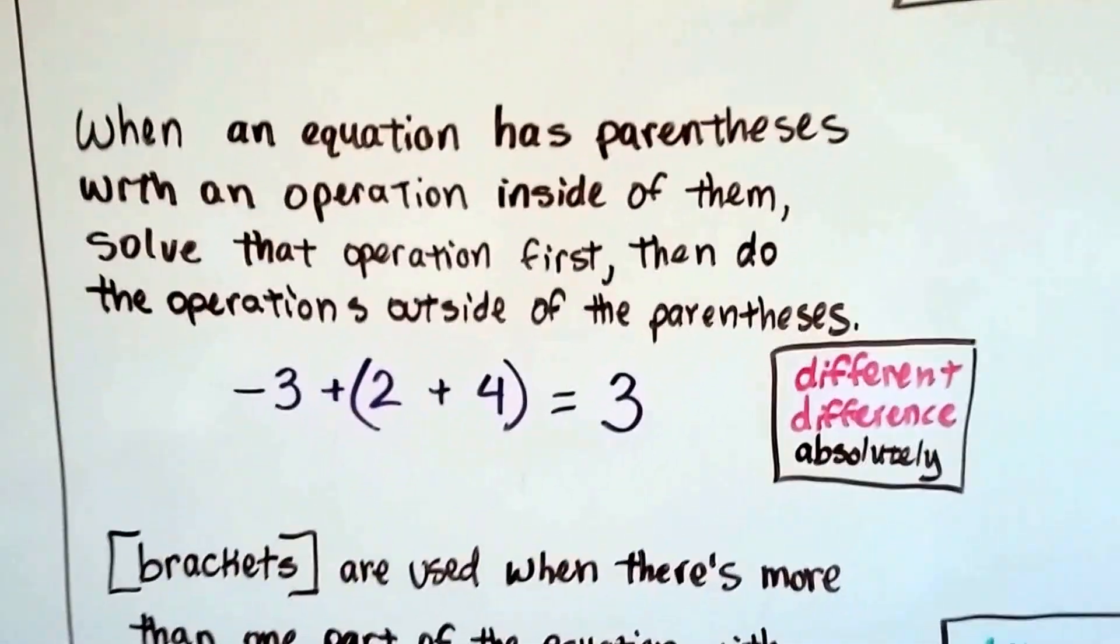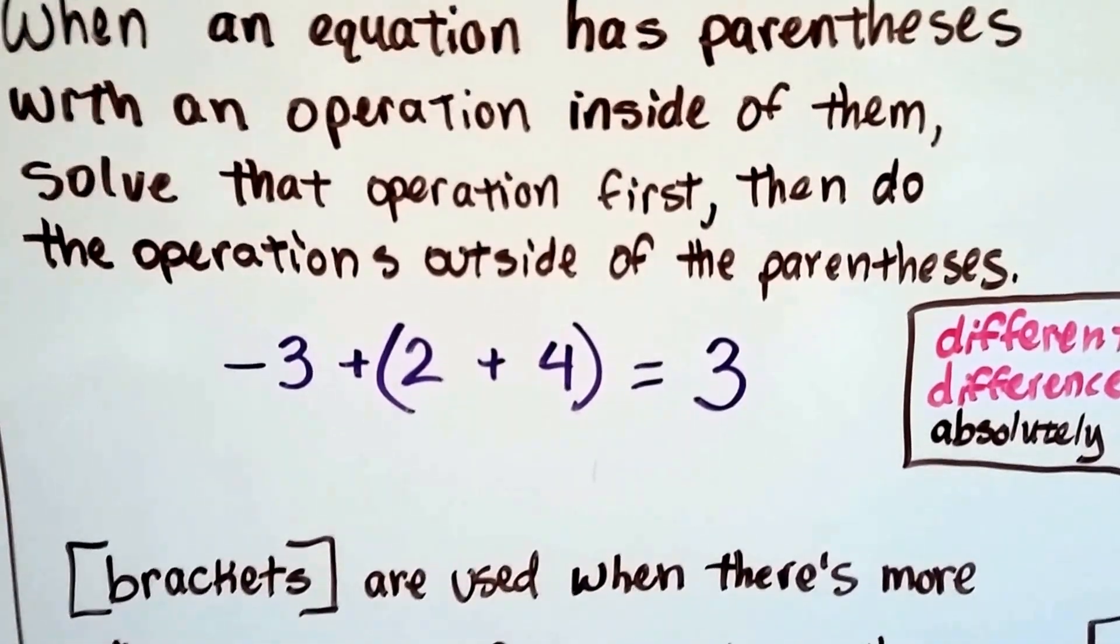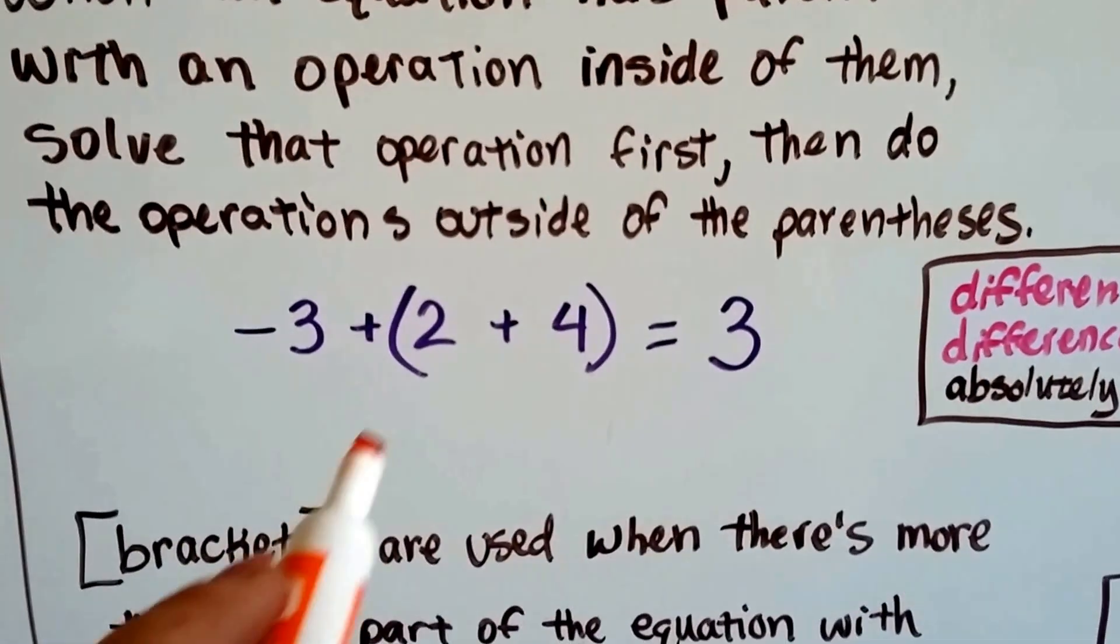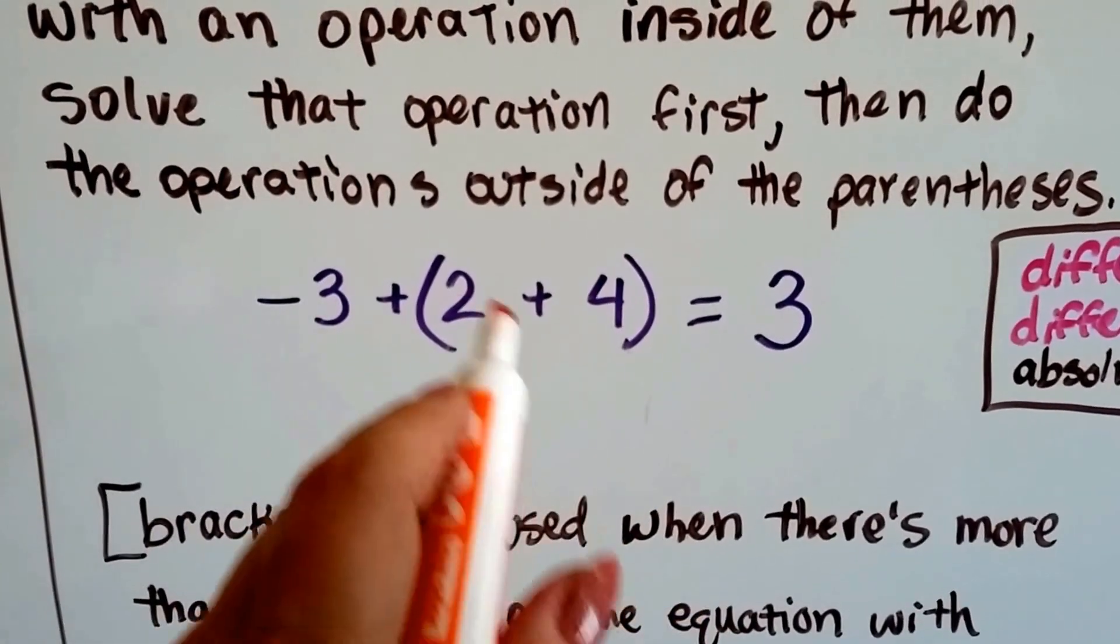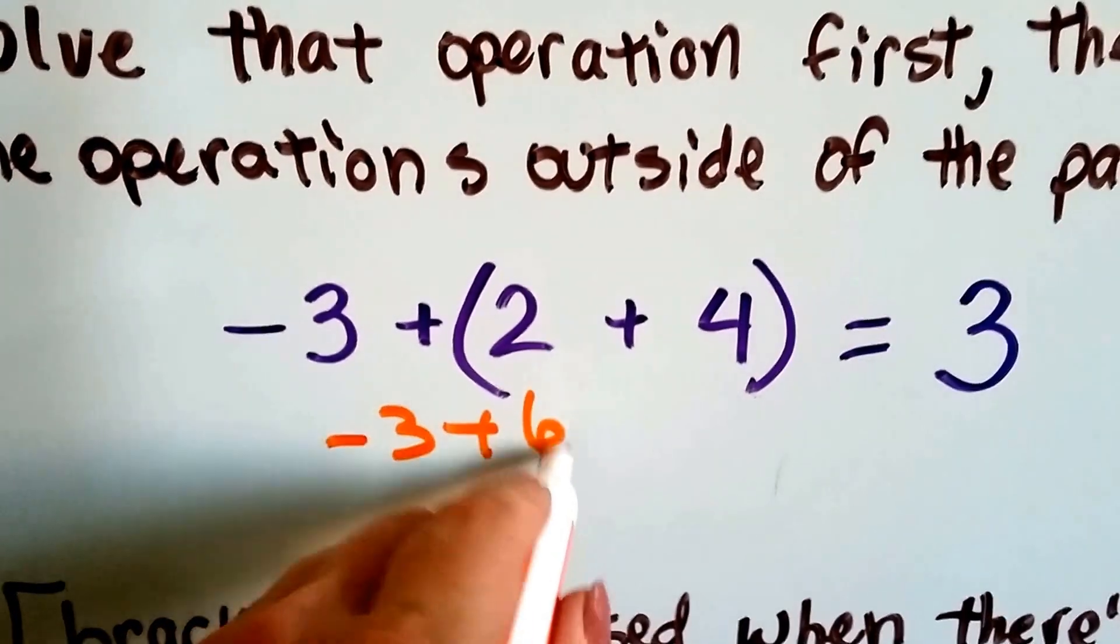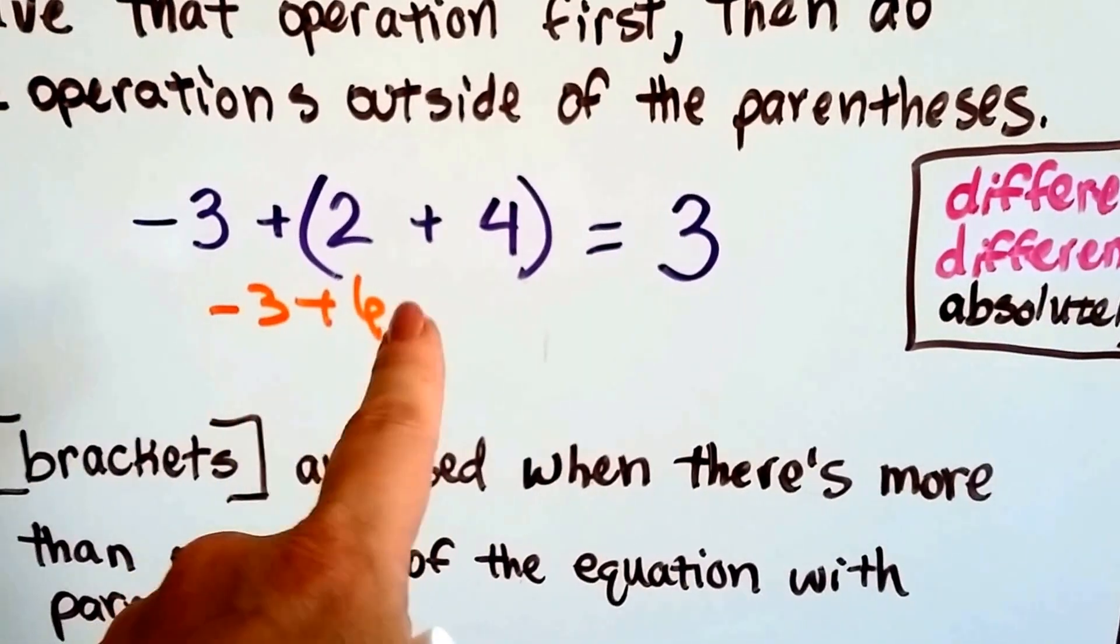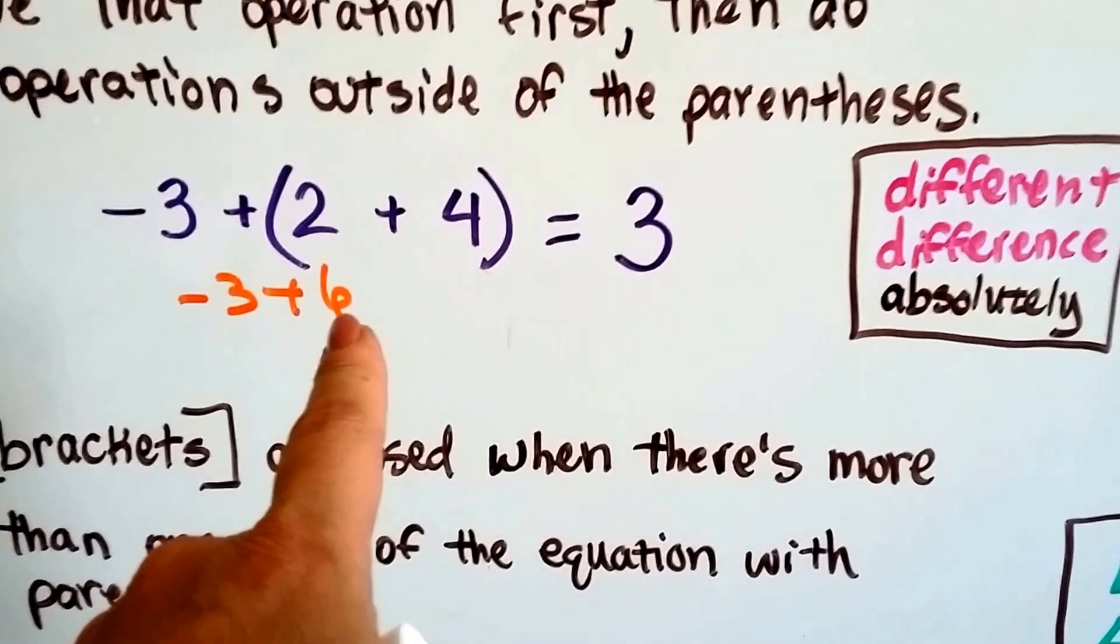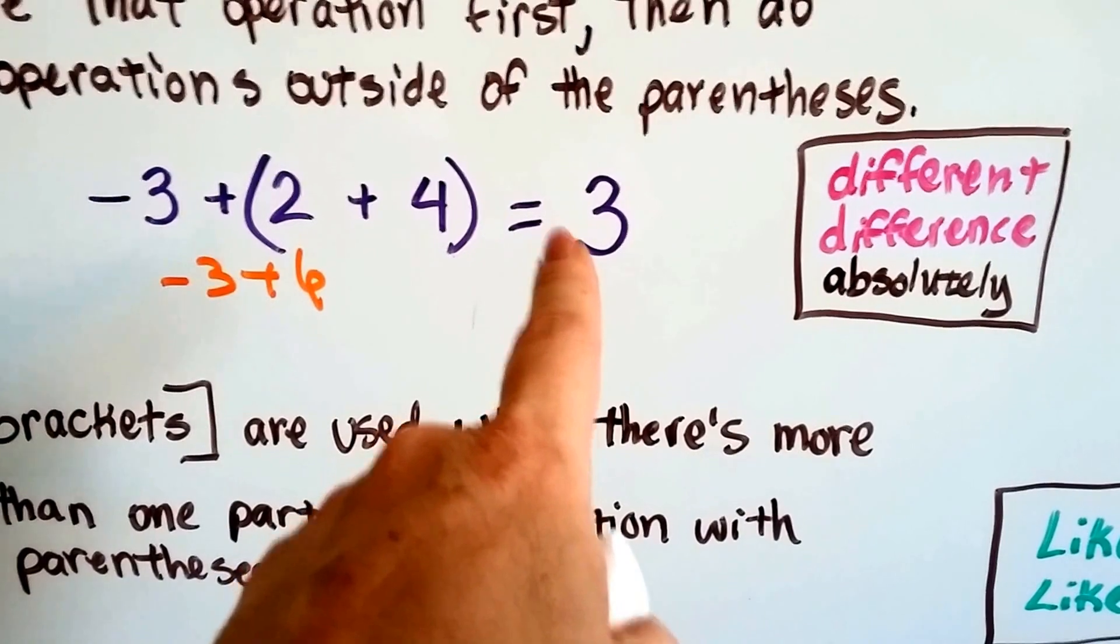So let's do this one. When an equation has parentheses with an operation inside of them, we solve that operation first. Right? That's the order of operations. It says parentheses first. Then we do the operations outside of the parentheses. So this would be 6 inside the parentheses, so we have a negative 3 plus 6. They have different signs, so we find the difference. The difference between a 3 and a 6 is 3. Which one is farther from 0 with absolute value? The 6 is, so it's going to be a positive 3.